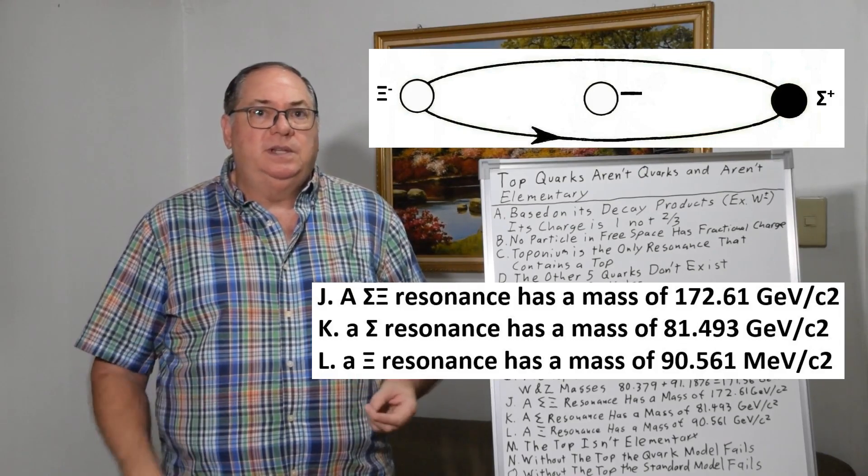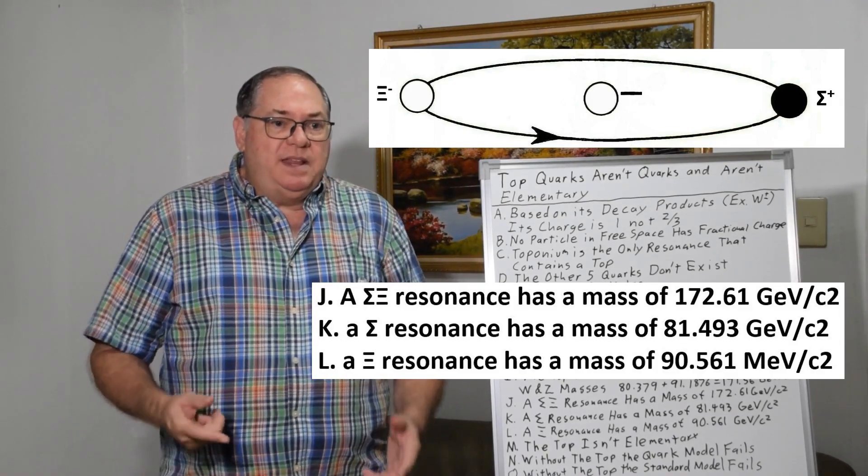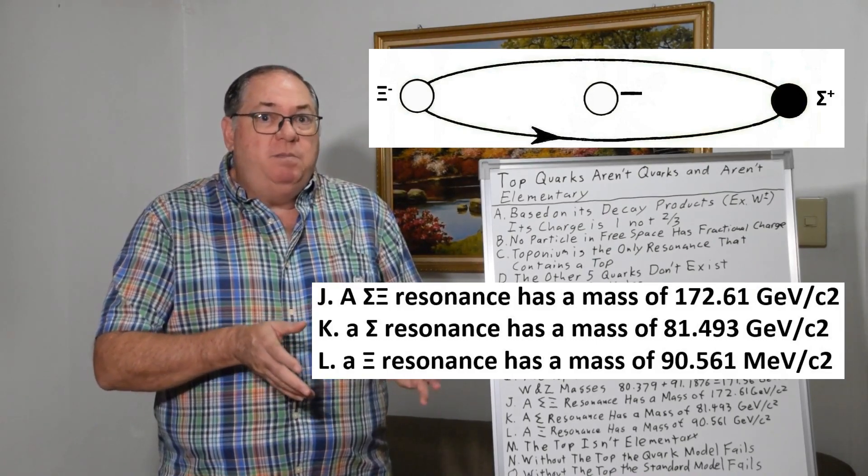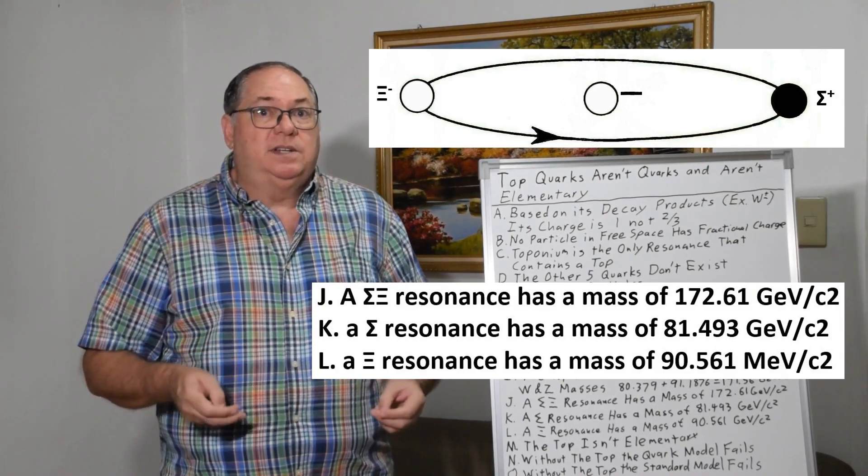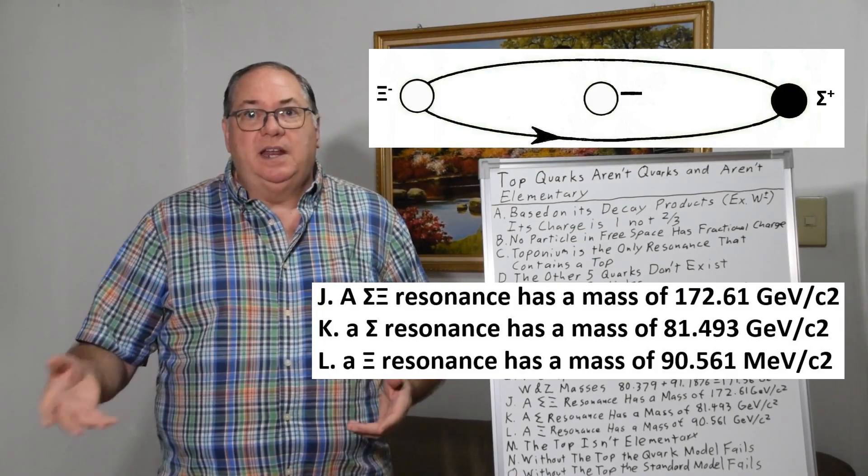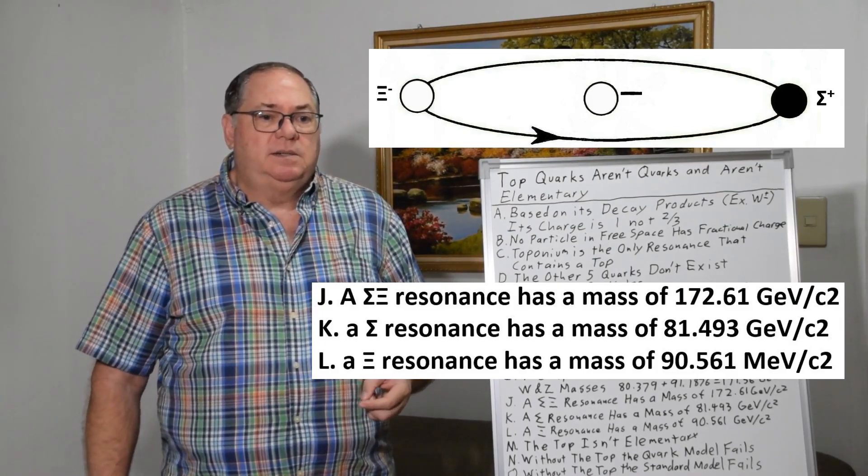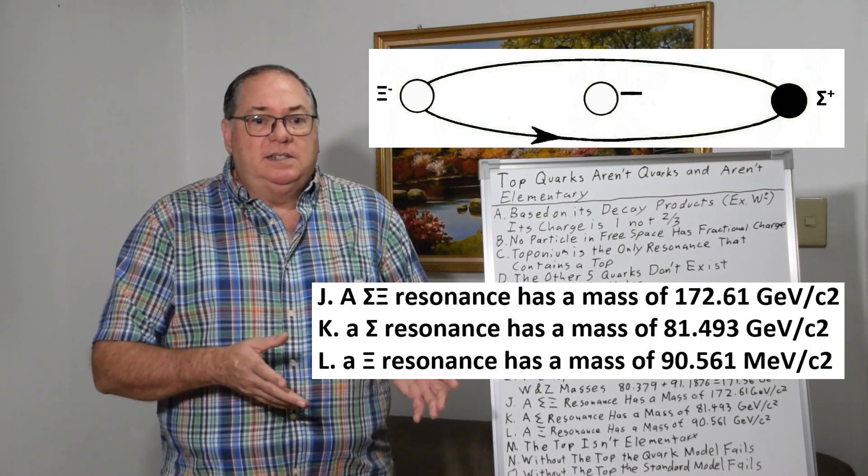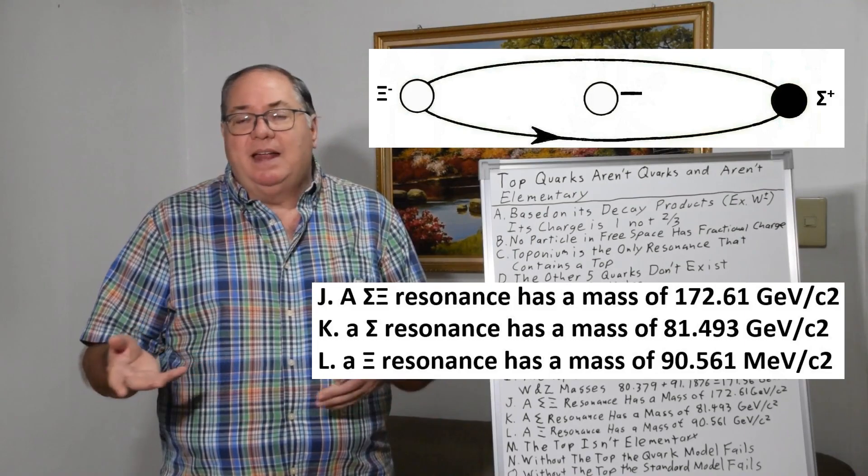So that right there tells us that we may just have two baryons in a relativistic orbit giving us the energy of the top resonance.